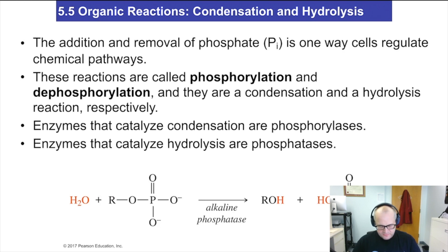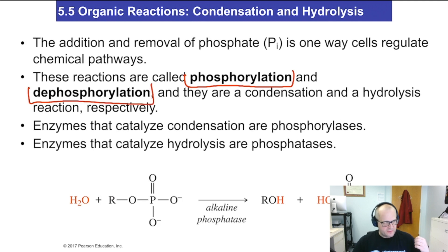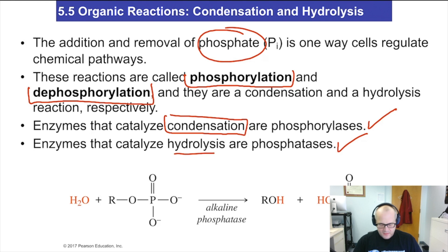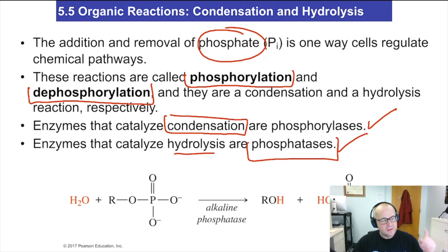Phosphorylation and dephosphorylation are very important reactions in the body because ATP works with these. A phosphorylation is the addition of a phosphate group — PO4 — to a molecule. Dephosphorylation is the removal of a phosphate group. Enzymes govern these reactions: they're called phosphorylases, which do the condensation reaction and add the phosphate, and phosphatases, which do the hydrolysis reaction and remove the phosphate. These are two very important enzymes you'll probably want to know for exams, assignments, and microbiology.